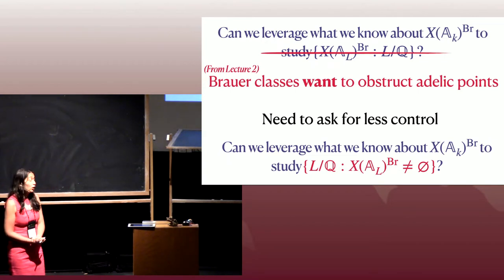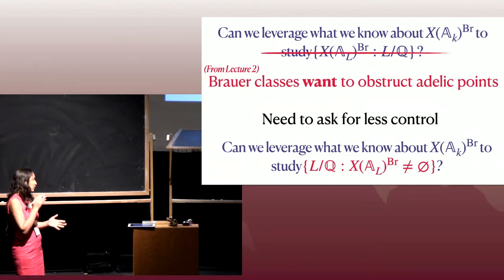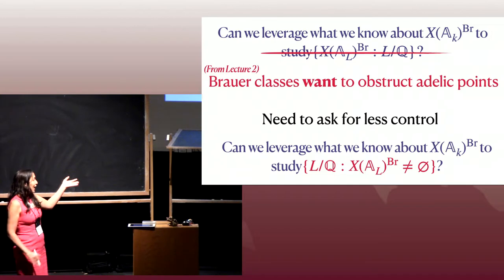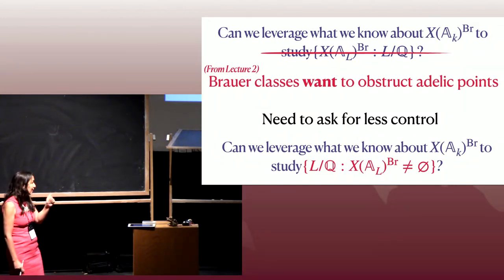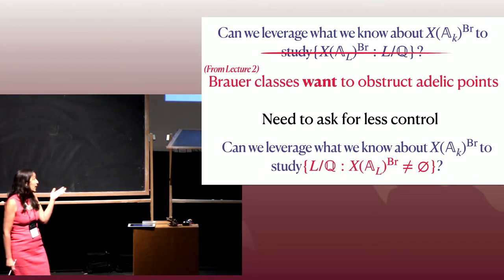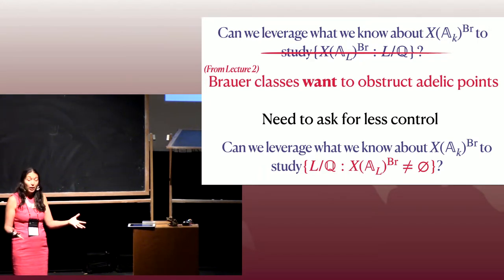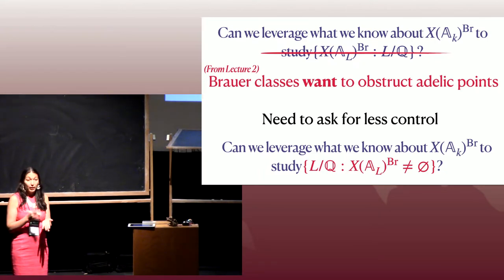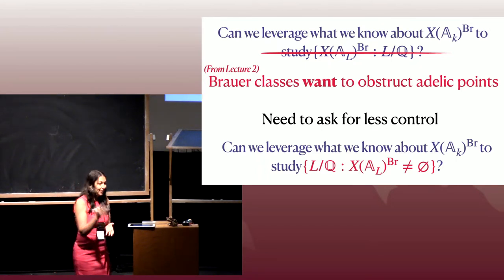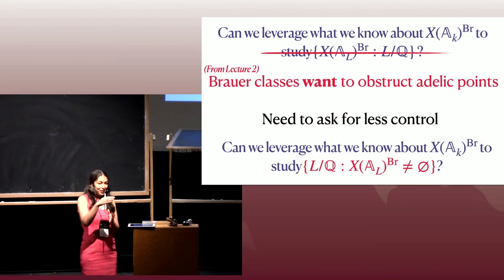There were two parts to the question. First: can the Brauer group or Brauer quotient change as you go up on extensions? Yes, that can happen. Second: instead of asking about adelic points orthogonal to the entire Brauer group, you could ask just if they're orthogonal to the image of the Brauer group you get over K — the image of the restriction map. That is a very good first-step question, and it will come up in the talk.